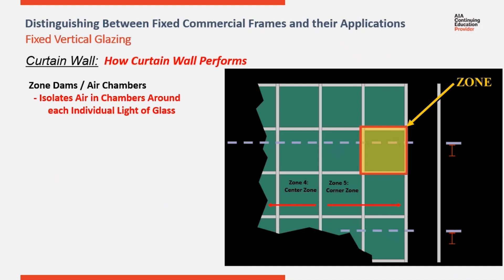The air pressure around each light of glass is able to pressure equalize with the exterior air, allowing water in the system to weep to the exterior. Storefront systems have water deflectors at all horizontal to vertical joints to divert water to the verticals, allowing it to flow down to the sub-sill and out.